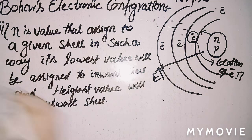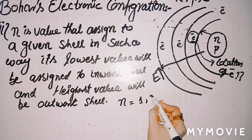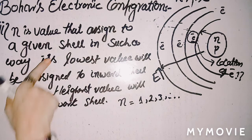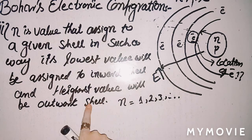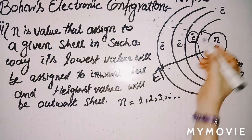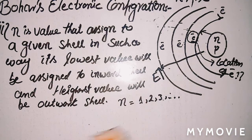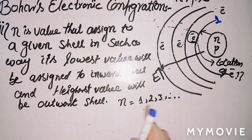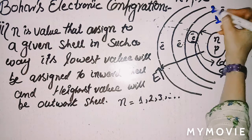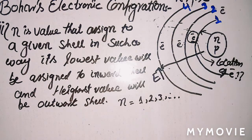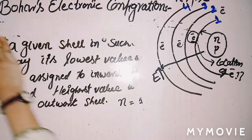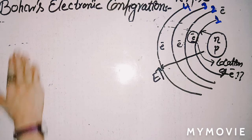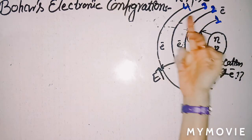According to the n-value, shells are numbered starting from 1, 2, 3, and so on. The lowest value (n=1) will be assigned to the lowest energy level — the innermost shell — and the highest values are assigned to the outermost shells. So shell numbering goes: n=1, n=2, n=3, n=4, and so on outward from the nucleus.